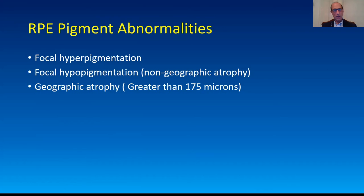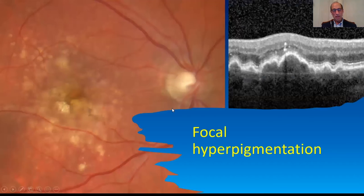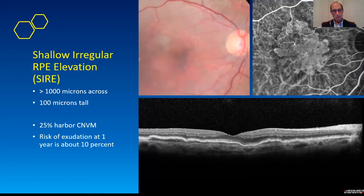RPE abnormalities are categorized separately for classifications. There's focal hyperpigmentation, focal hypopigmentation, and geographic atrophy. A question came up about the SIRE: it's a non-exudative neovascular complex — that's a new concept. At 25% of the time there's a neovascular membrane. This patient has one, visible on ICG, but there's no fluid. If there's no fluid, no lipid, and no blood, it's considered non-exudative. This was something you couldn't detect with fluorescein, so it's a new entity, especially with OCT angiography.